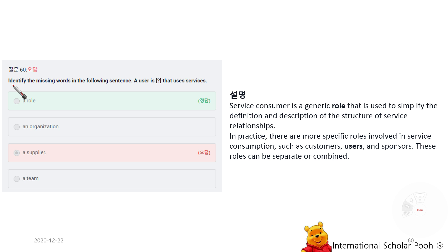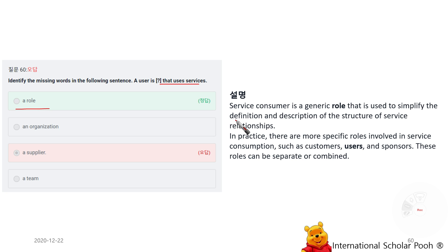Identify the missing words: 'A user is a role that uses services.' Service consumer is a generic role. In practice, there are more specific roles involved in service consumption, such as customers, users, and sponsors. These roles can be separated or combined.